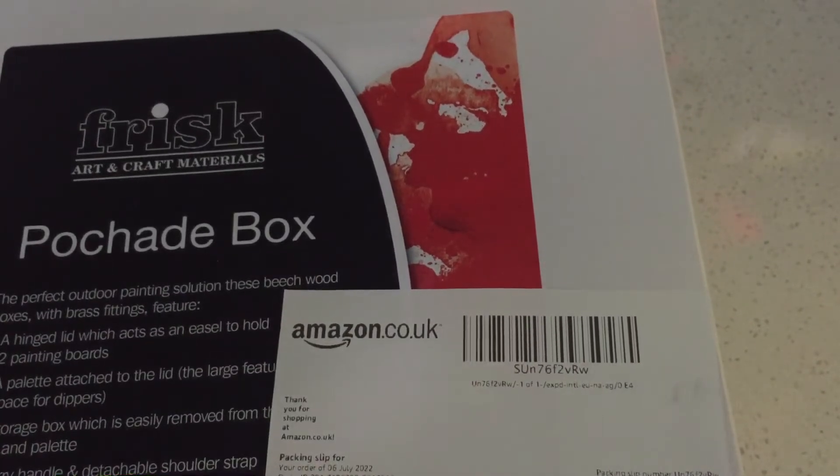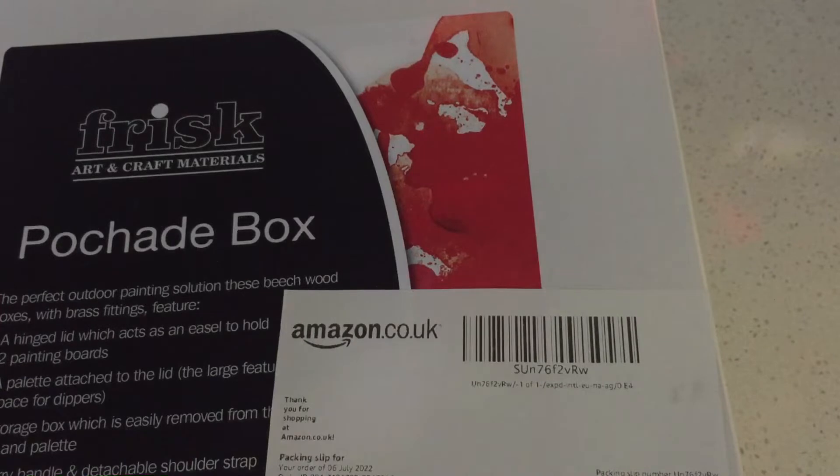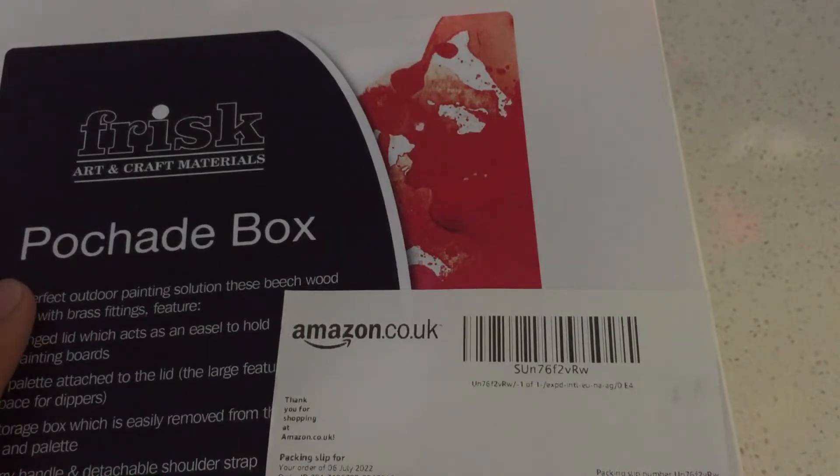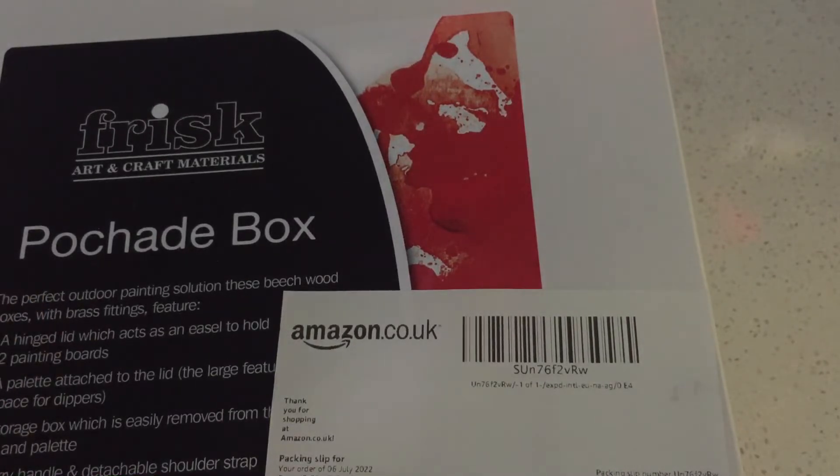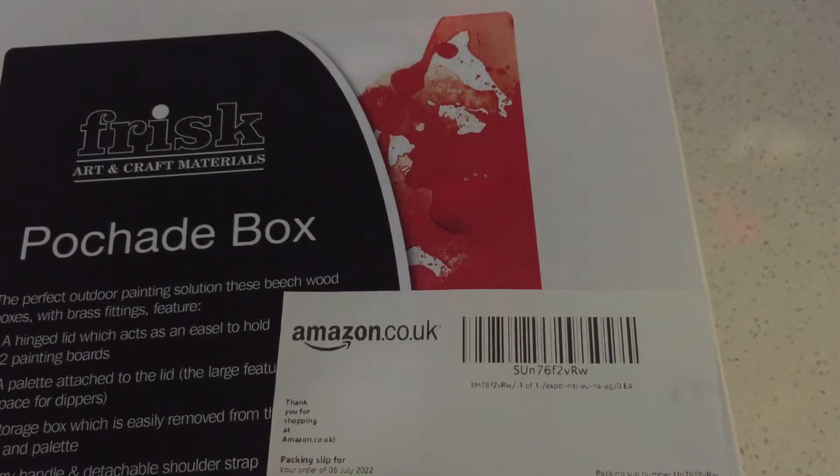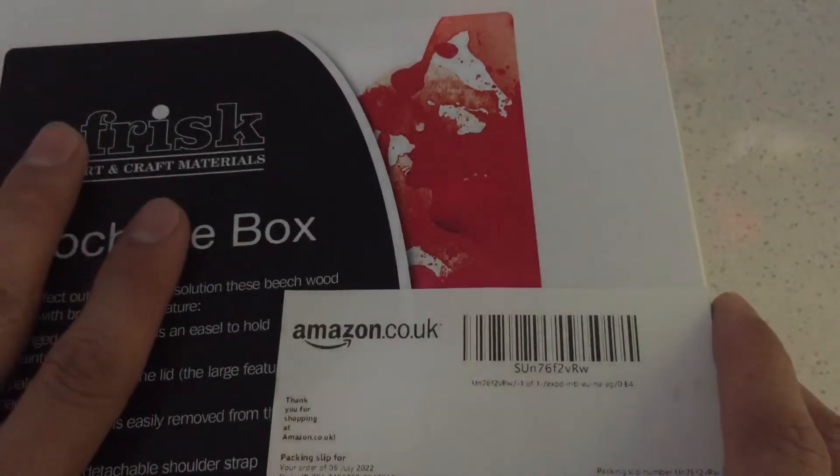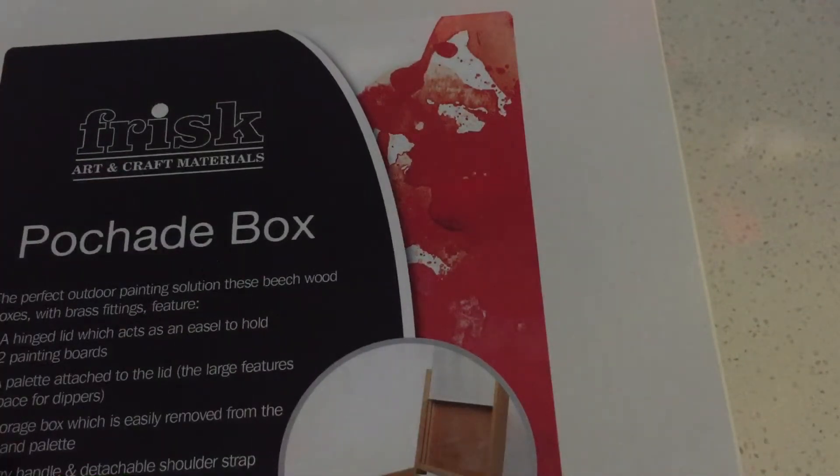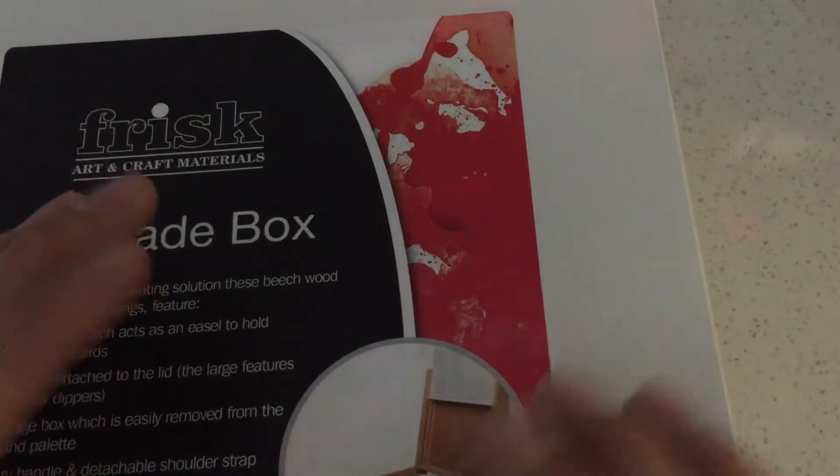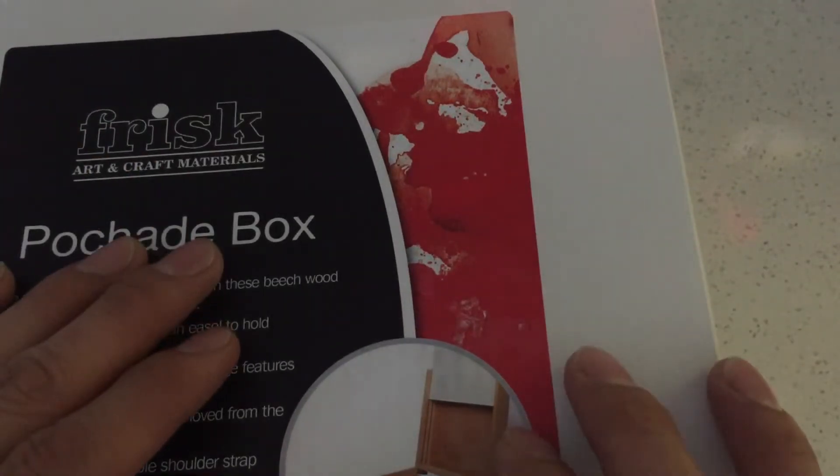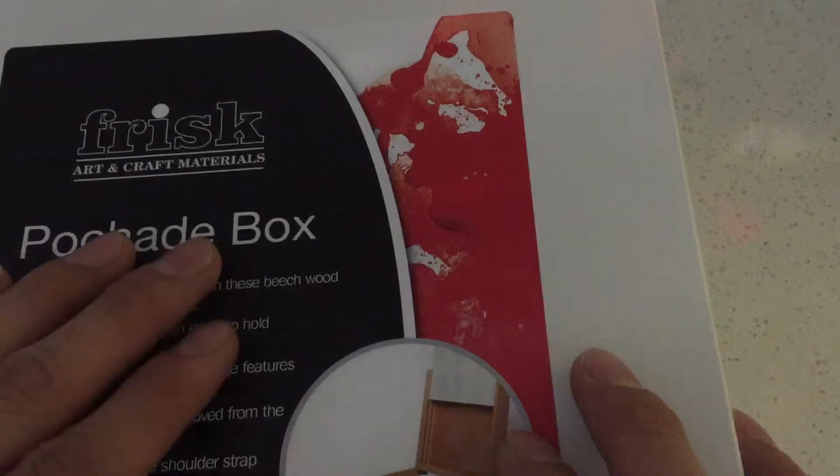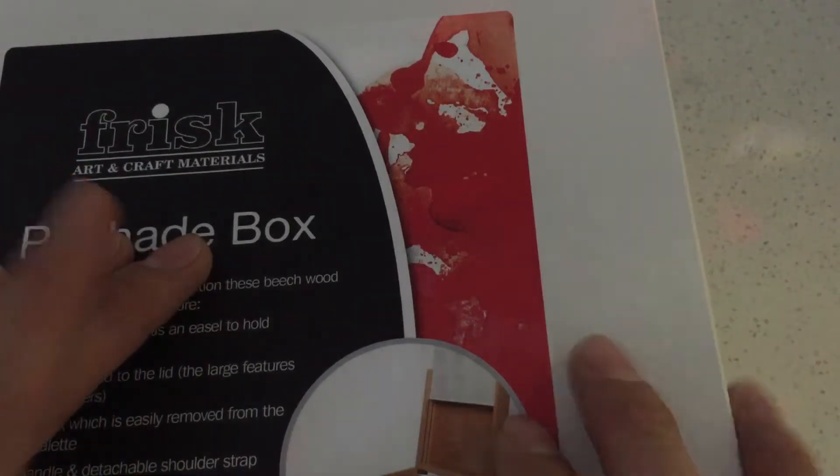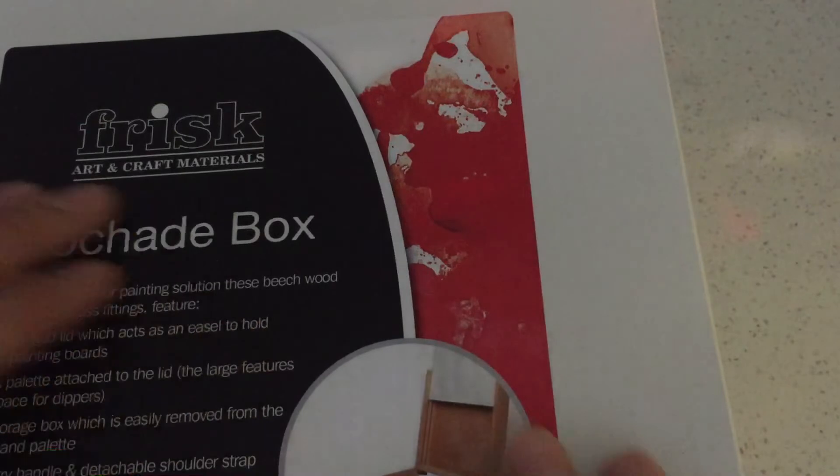Alrighty, I wanted to make a quick unboxing video for a pochade box that I bought on Amazon. I haven't seen any video reviews on it or anything like that. So let's get to it. I ordered this on the 6th of July and it is the 12th. So this arrived in Portland, Oregon from the UK in six days. And to put that in perspective here, I ordered local cheese paste and it was supposed to arrive yesterday and it didn't show up even though it said delivered. So it got here even quicker.